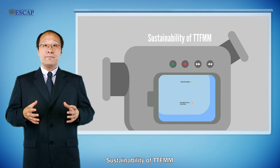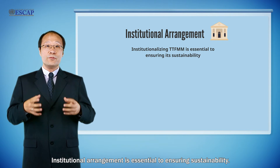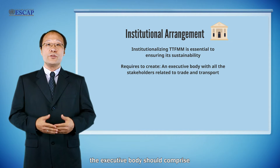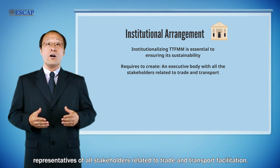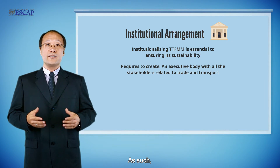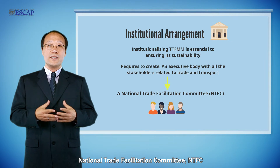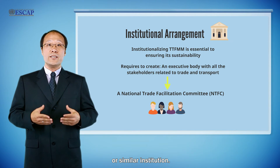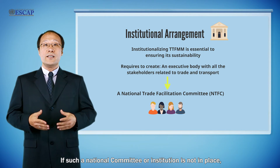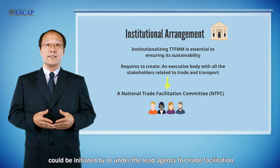Sustainability of TTFMM is at the core of its design. Institutional arrangement is essential to ensuring sustainability. In principle, the executive body should comprise representatives of all stakeholders related to trade and transport facilitation. As such, TTFMM should ideally be anchored with a National Trade Facilitation Committee or similar institutions. If such a national committee or institution is not in place, an interagency committee could be initiated by or under the lead agency for trade facilitation.